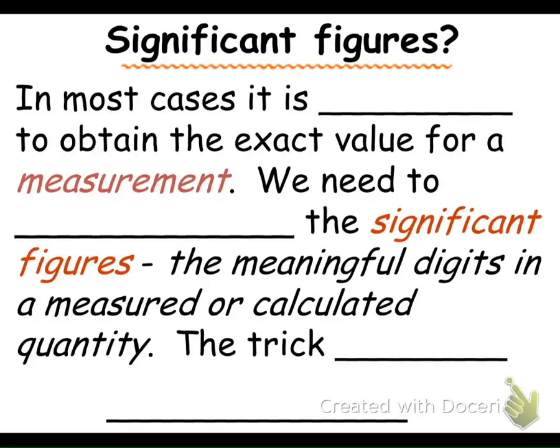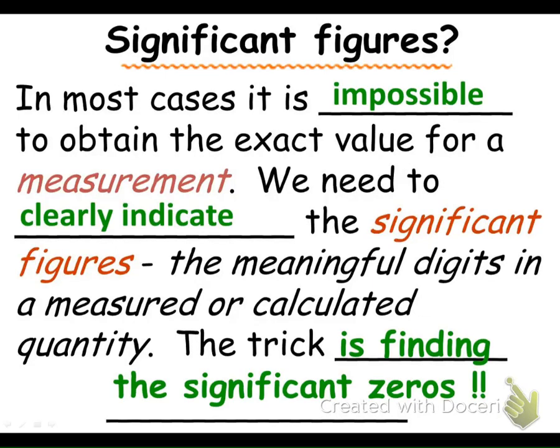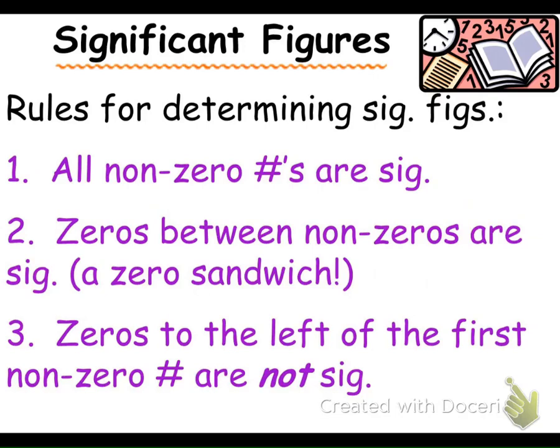Now we're going to talk about significant figures. In most cases, it's impossible to obtain an exact value for a measurement, so we need to clearly indicate the significant figures — just what digits are actually meaningful in a calculation. The trick is that you've got to find the significant zeros in a problem, so we're going to learn some rules for that now.